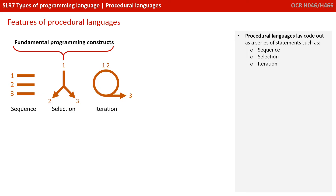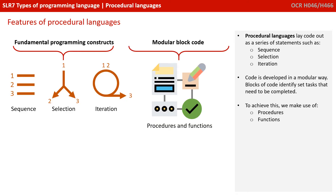Procedural languages lay code out as a series of statements, such as sequence, selection and iteration. The code is developed in a modular way. Blocks of code identify set tasks that need to be completed, and we achieve this by making use of procedures and functions.